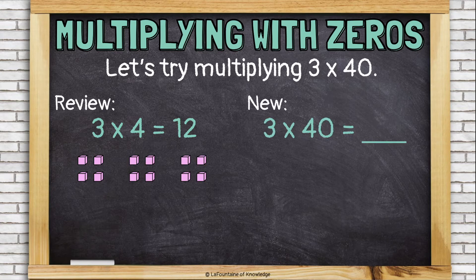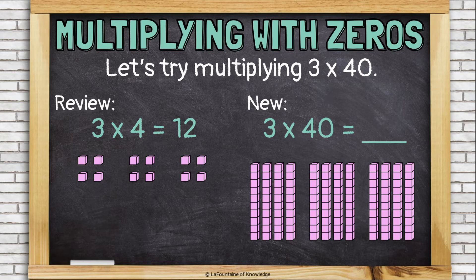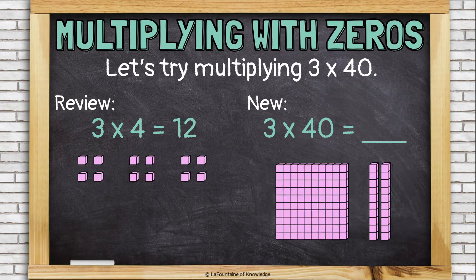Now let's look at 3 times 40. This time we have 3 groups of 40, which is 4 tens. That's 120.